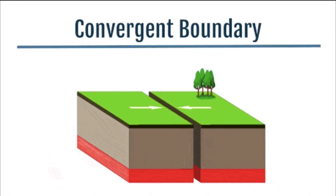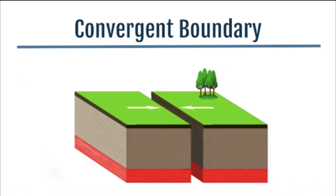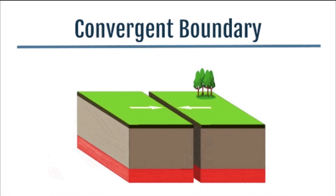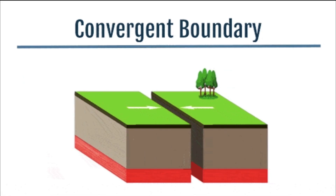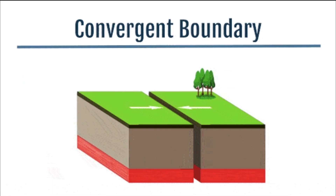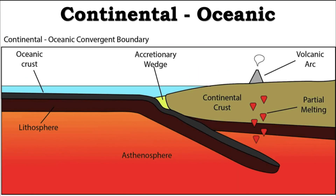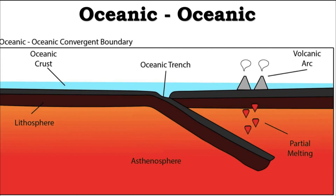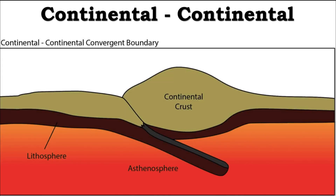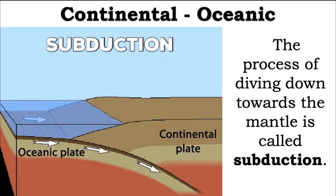The second type of plate boundary is convergent plate boundary. This occurs when two tectonic plates move toward each other. The convergence of plates takes place between oceanic and continental plates, two oceanic plates, and two continental plates.